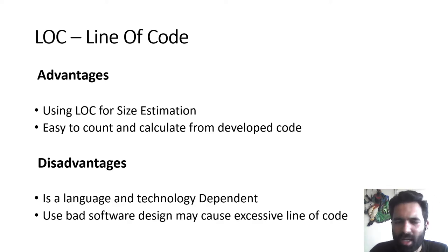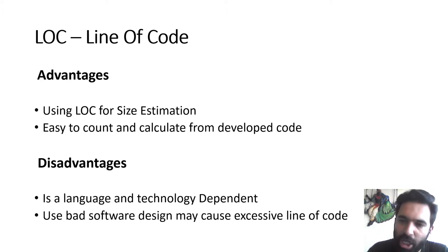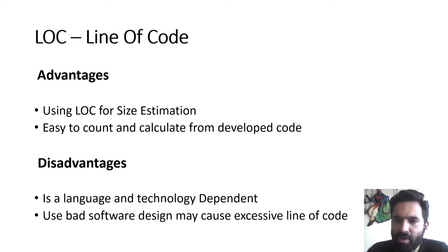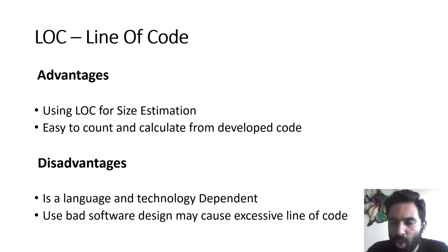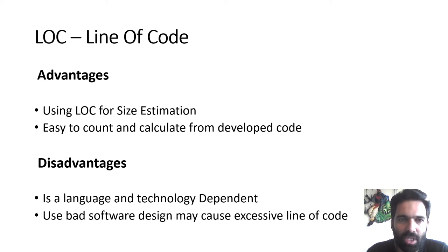The first advantage of LOC is that the actual size of the program can be calculated using it. The second advantage is that it is easy to count and calculate for developed code — that is, a program which is ready to execute and completed by the programmer. A disadvantage is that it is language and technology dependent; a specific language or technology must be used. Also, bad software that continuously adds more lines makes counting very difficult.